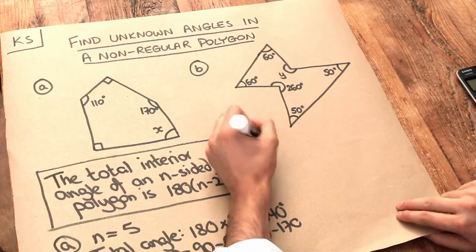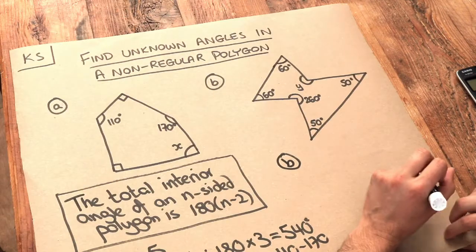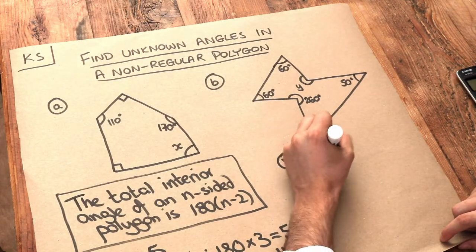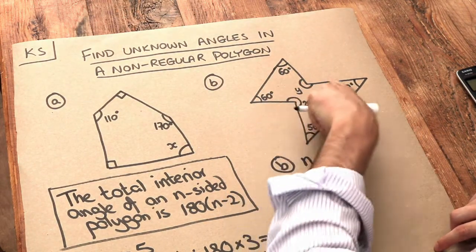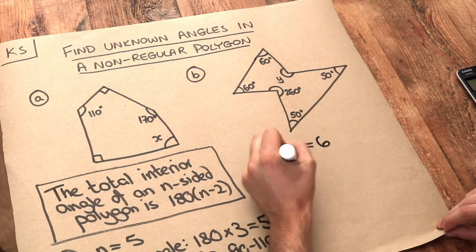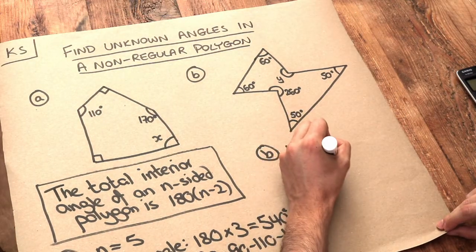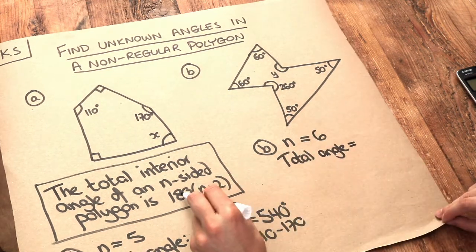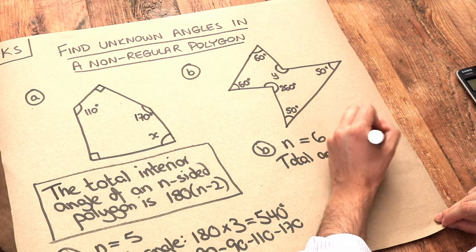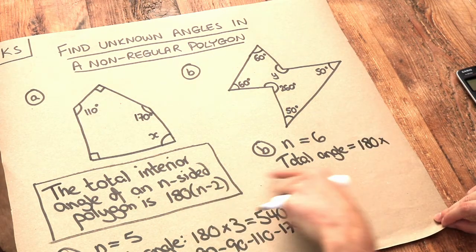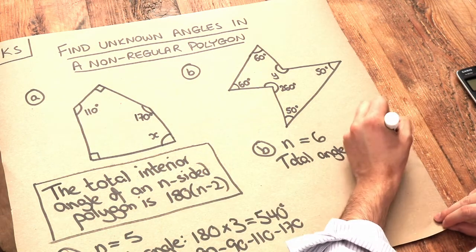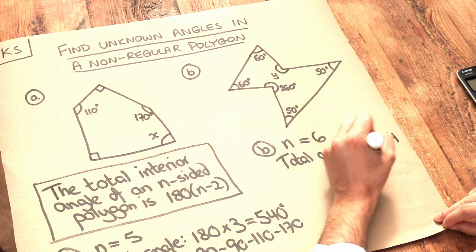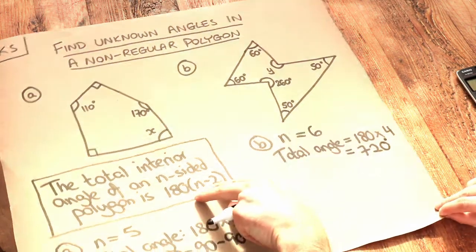What about b? Well firstly let's work out what n is. How many sides does it have? 1, 2, 3, 4, 5, 6. So the total interior angle is equal to 180 times by n minus 2, 6 minus 2 is 4. So it has a total interior angle of 720 degrees.